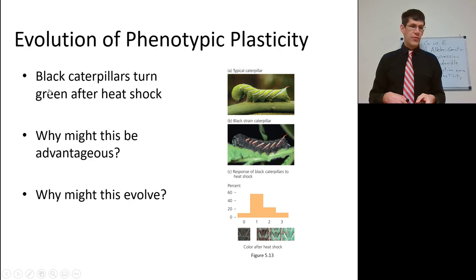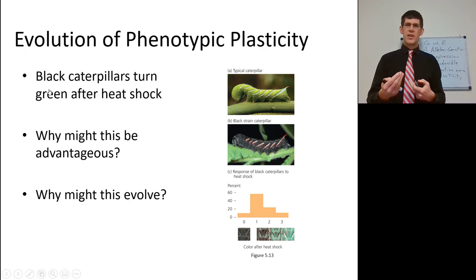That's a fair amount on G by E. G is genotype. E is environment. G by E is how much the genotype determines the response to environmental change.